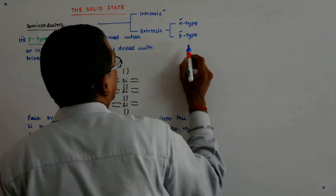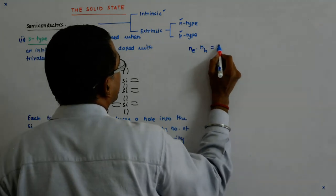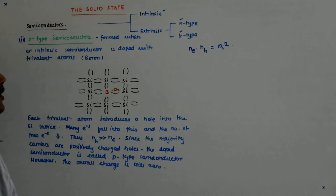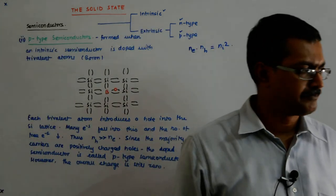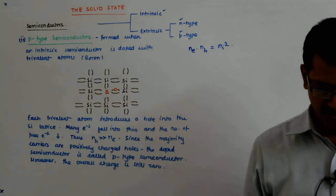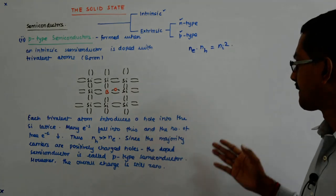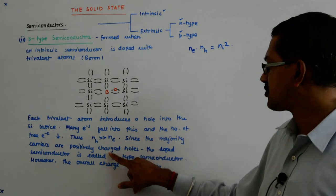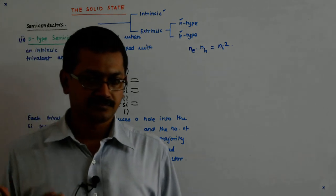And NE into NH is still NI square, even though NH is very, very large. So the conductivity obviously goes up.